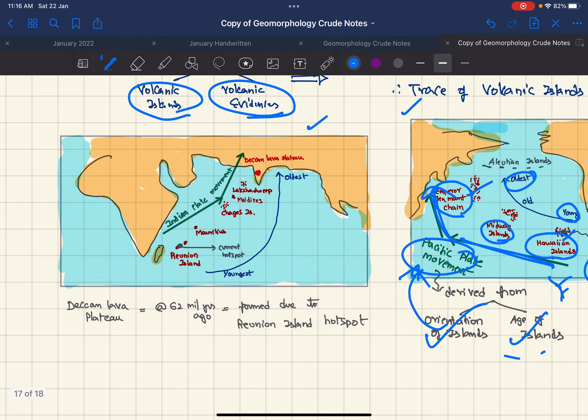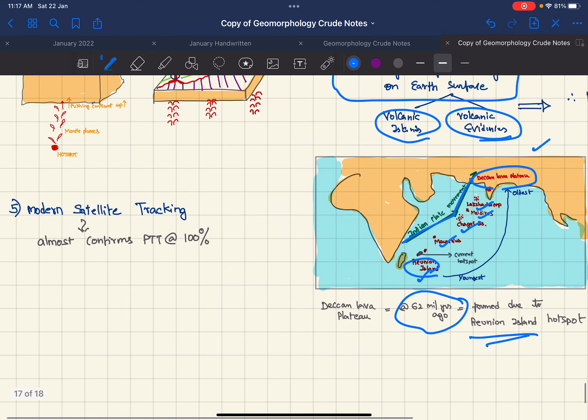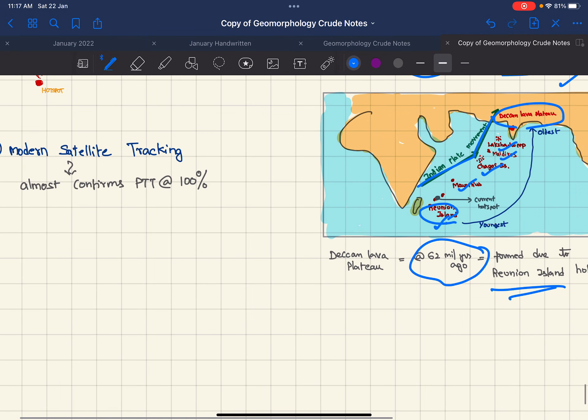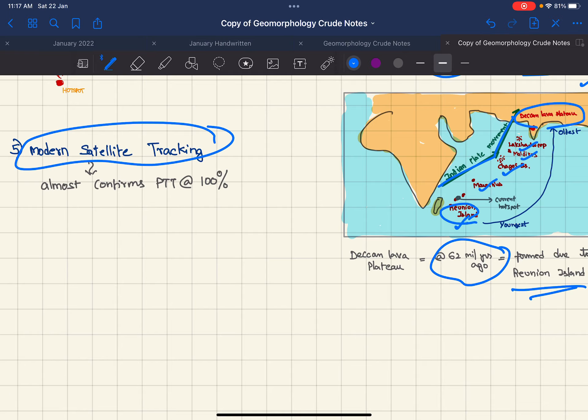Coming to the Indian Ocean, we have the hotspot under Reunion Island which will be the youngest, and the oldest is the Deccan Traps which is 62 million years old. In between we have Mauritius, Chagos Island, Maldives, and Lakshadweep. From this orientation of rocks and age of islands we can say Indian plate moved like this. That takes care of the hotspot evidences. Last evidence we have is modern satellite tracking which almost conclusively proves that PTT is right.